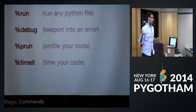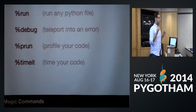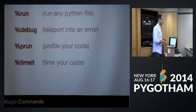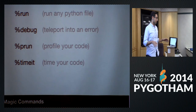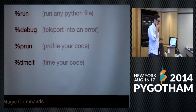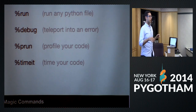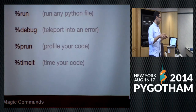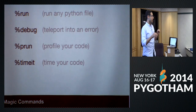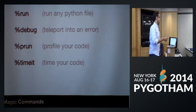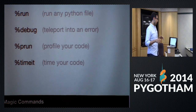One magic command is `run`. Whatever comes after run will run as if you had done Python from the command line, which is a useful way to run any script from within your interpreter. Another is `debug`, which is super amazing. If you ever run any code that throws an exception, type debug into your interpreter and you'll go back in time into a debugger right where the exception occurred — you go right back into the session without having to recreate the environment. It's a huge time saver.